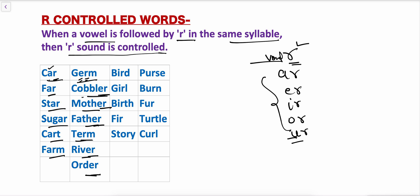River, order — the R sound is controlled. Here before R the vowel I is there, and here the vowel O is there, so the R sound is controlled. Bird, girl — I is before R. Fur — U is before R. Purse, bird, fur, turtle, curl — so the R sound is controlled in all these words.